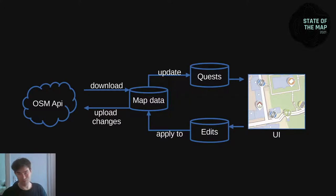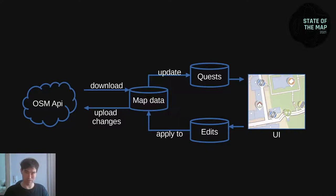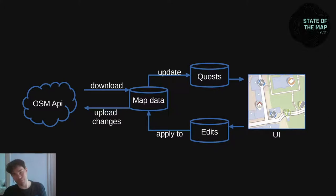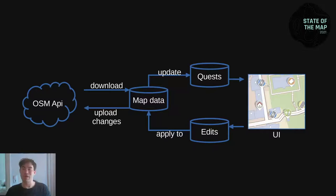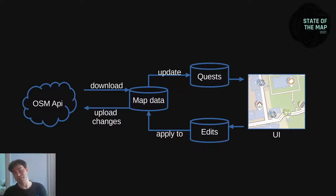We do it like most general purpose editors do it. We download the map data, persist it locally, and don't generate the quests immediately. We keep a local copy of the downloaded map data. Whenever that map data is updated, the quests are updated as well. The edits are not uploaded directly — the edits also apply to the map data. Thus the map data changes, and thus it triggers the quests to be updated. This way, when you answer that a building is a detached house, the new quest will be unlocked.